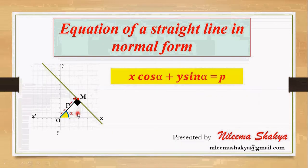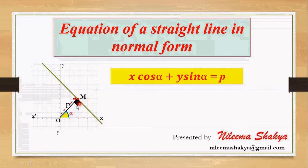In this equation, p is the length of the perpendicular drawn from the origin to the line, and alpha is the angle made by that perpendicular with the x-axis in the positive direction.